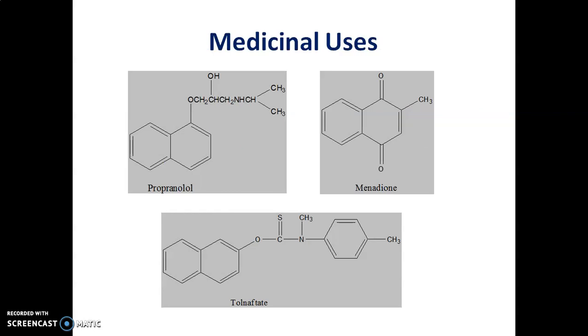Medicinal uses of naphthalene. Naphthalene is present in different drugs such as propranolol which contains naphthalene ring. Propranolol is used as an antihypertensive agent. Specifically, it is a beta blocker which is used for treatment of angina pectoris, myocardial infarction and cardiac arrhythmia. Naphthalene nucleus is also present in antifungal drug like tolnaftate. Tolnaftate is used in the treatment of different forms of tinea and pityriasis versicolor infections.